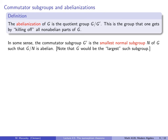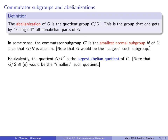The commutator subgroup G′ is the smallest normal subgroup N of G such that G mod N is abelian. There might be bigger normal subgroups whose quotient is also abelian — for example, quotienting by all of G. But G′ is the smallest. Equivalently, G mod G′ is the largest abelian quotient of G.